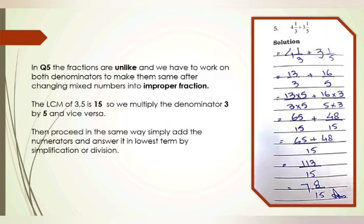Now let's consider another case — question number 5 from the book — where the two fractions are unlike and you have to work on both fractions. Step one: convert each mixed number into an improper fraction. For 4 and 1/3: 4 × 3 = 12, plus 1 is 13/3. For 3 and 1/5: 5 × 3 = 15, plus 1 is 16/5. These are both improper fractions. Checking, the denominators 3 and 5 are unlike.